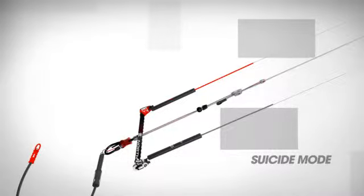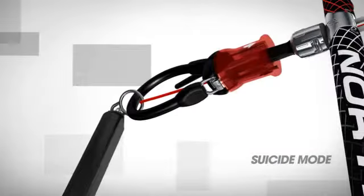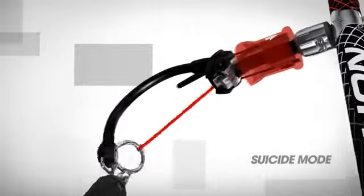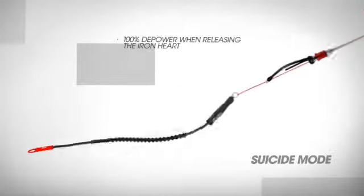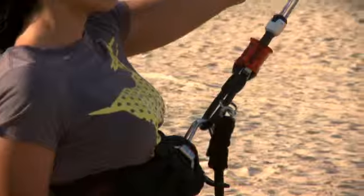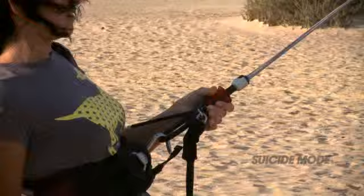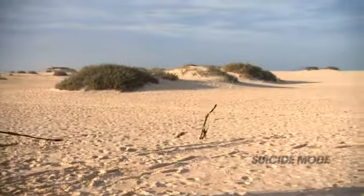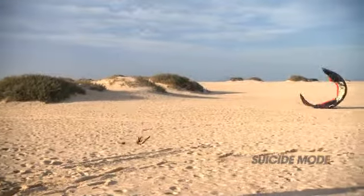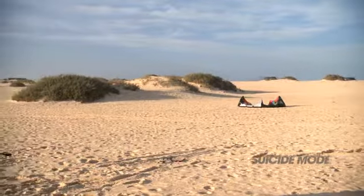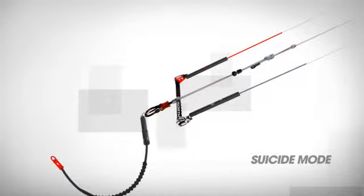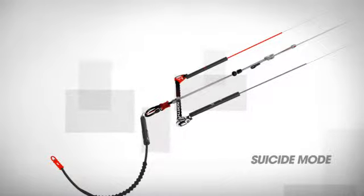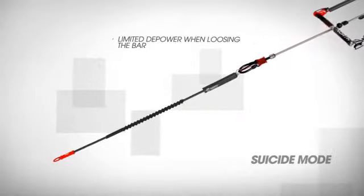When riding in suicide mode hooked in and you release the system, the large metal ring will slide off the chicken loop, offering you 100% depower. However, it's important to point out that when riding in suicide mode and attempting unhook tricks, if you let go of the bar, the system will not offer 100% depower.